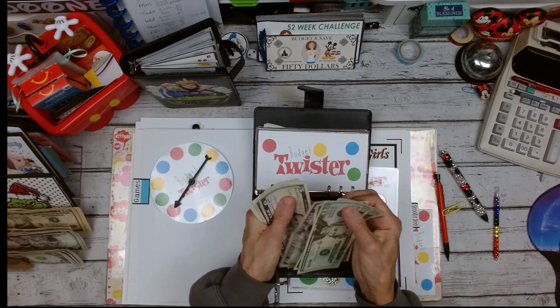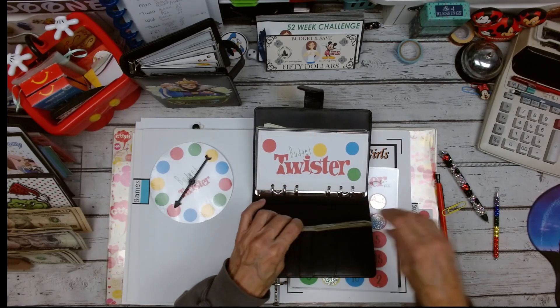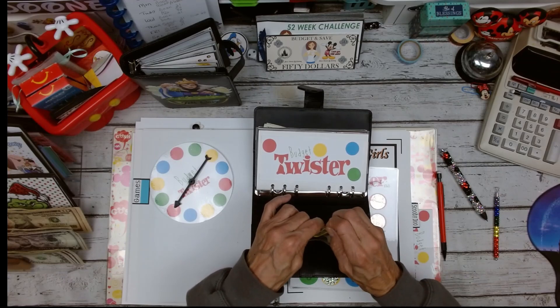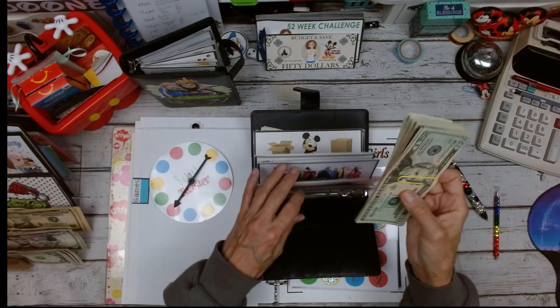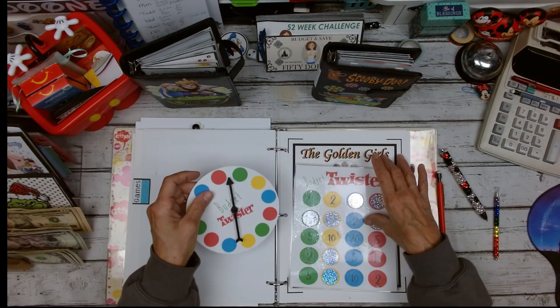All right. Got $93 saved with Twister. All right. Let's see what we can show some love to.